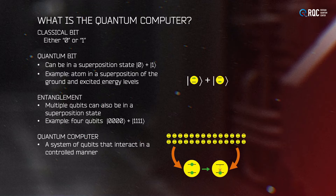An obvious question that can arise is: what's the benefit? The classical bit has a well-defined state of either 0 or 1, but what's the benefit of the superposition state? Like we can have a dead cat or a living cat, but what's the benefit of a half-dead cat? The answer is, if it's just one qubit, there is not much benefit. The benefit arises if we have multiple qubits, such as in the case of four qubits, which can be in an entangled state: 0,0,0 plus 1,1,1,1.